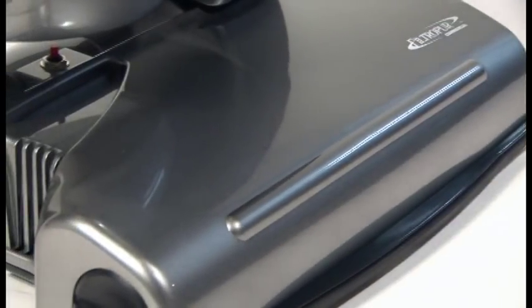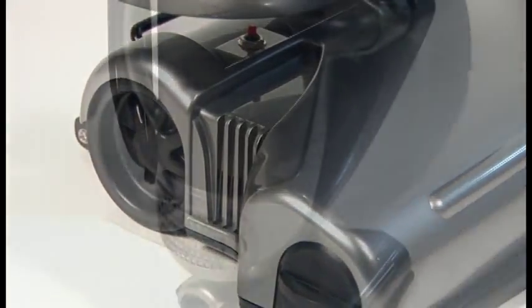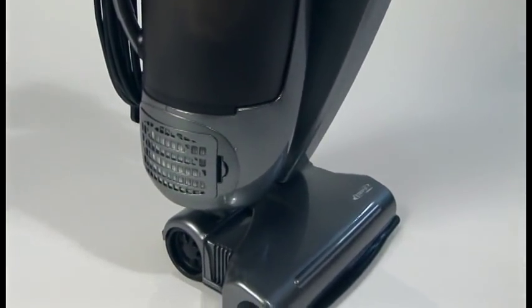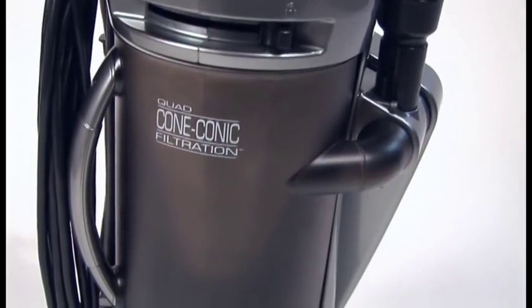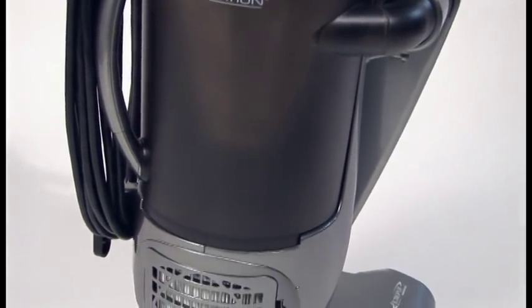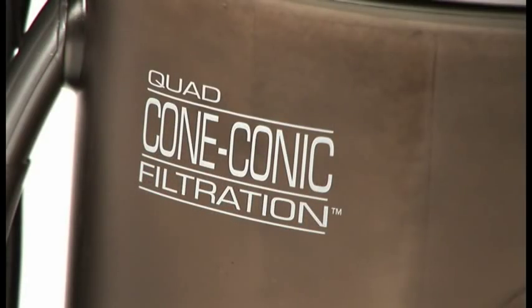Unlike other uprights, dirt and debris never pass through a fan or motor. That's because the Filtropure uses a powerful motor for the powerhead brush agitator and a separate uniquely pre- and post-filtered suction motor at the canister. It all adds up to what we call our patented quad cone conic filtration system, and that's where the revolution truly begins.